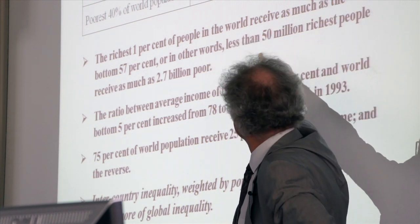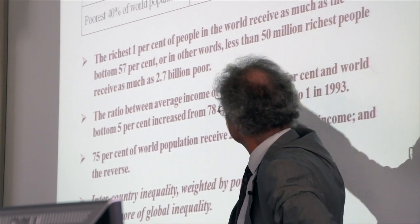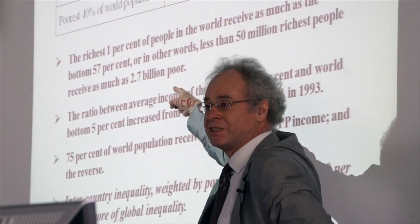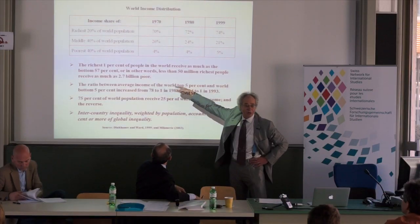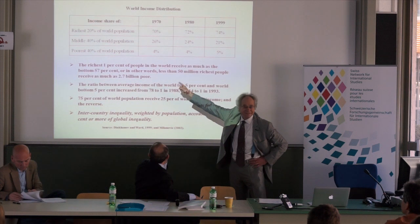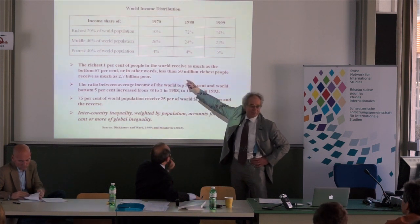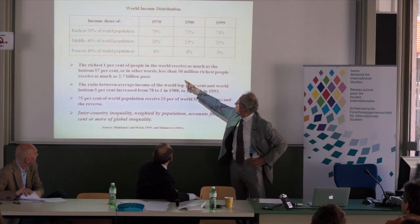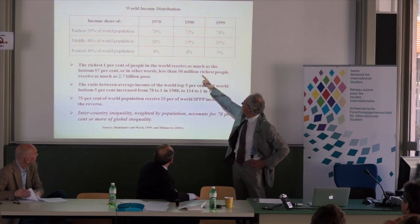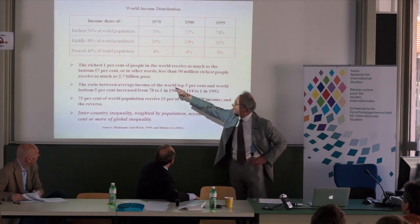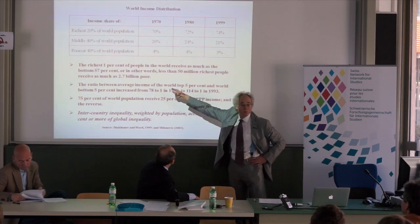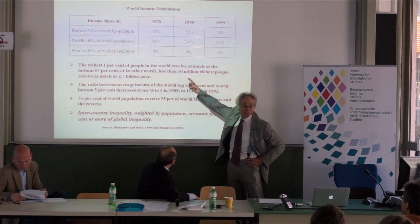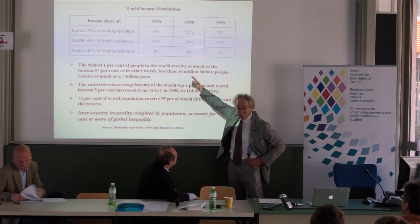The richest 1% of the people receive as much as the bottom 57% — take that home with you, take that home and tell people over dinner. Less than 50 million of the richest people receive as much as 2.7 billion poor people. It's a big number.